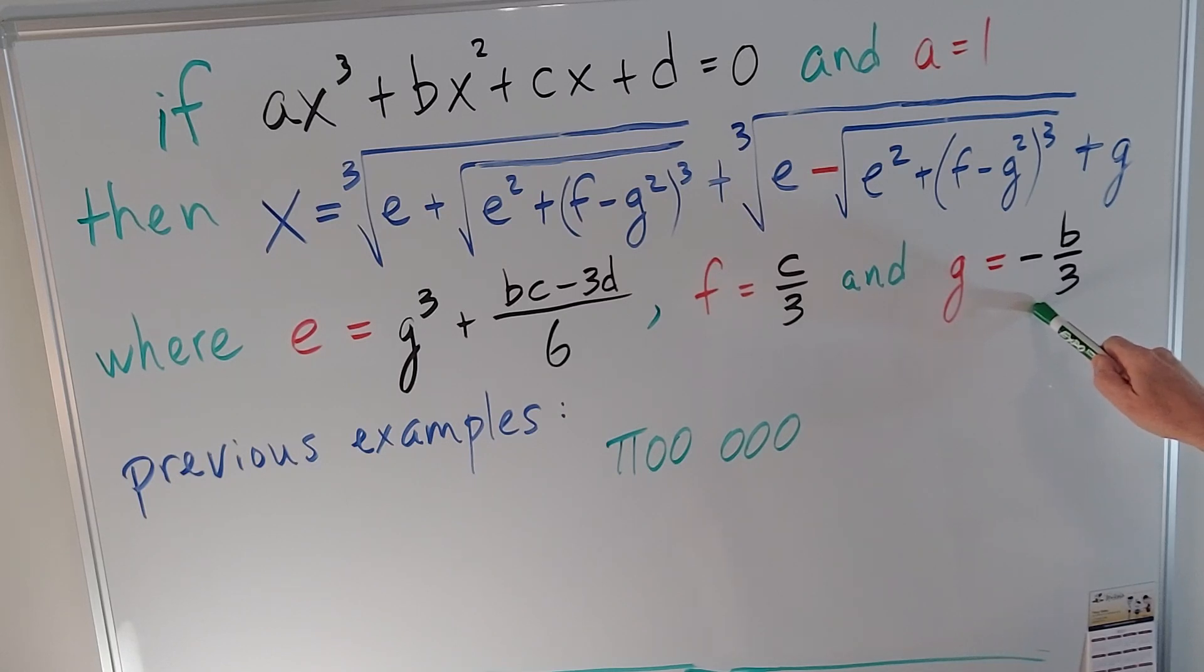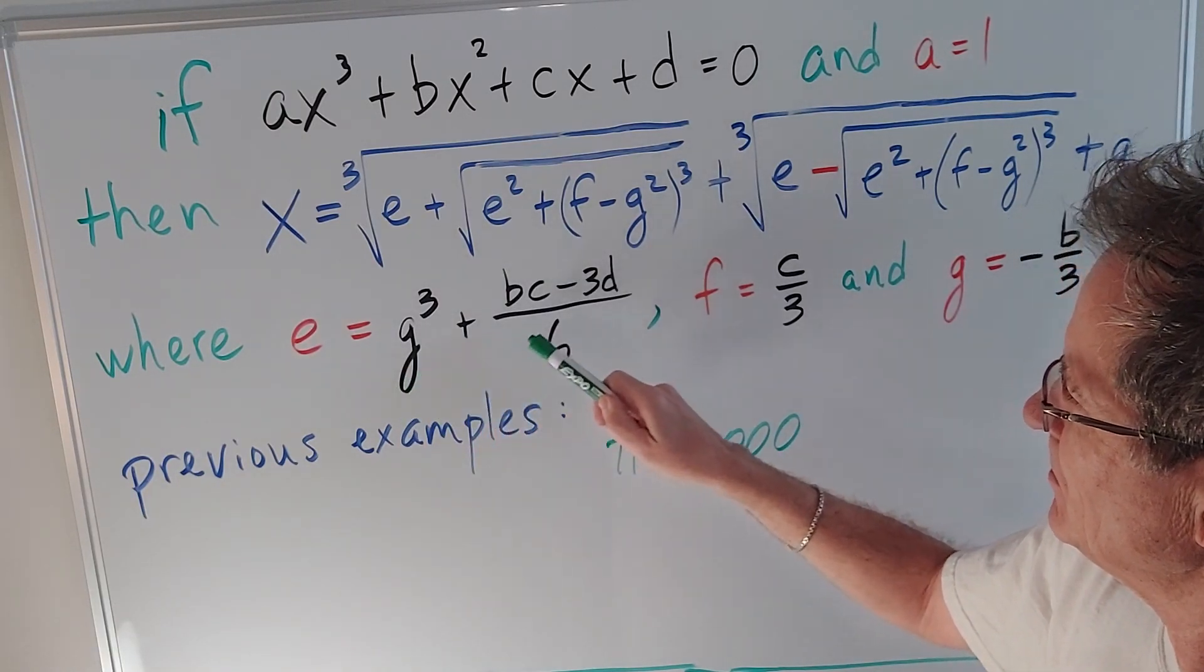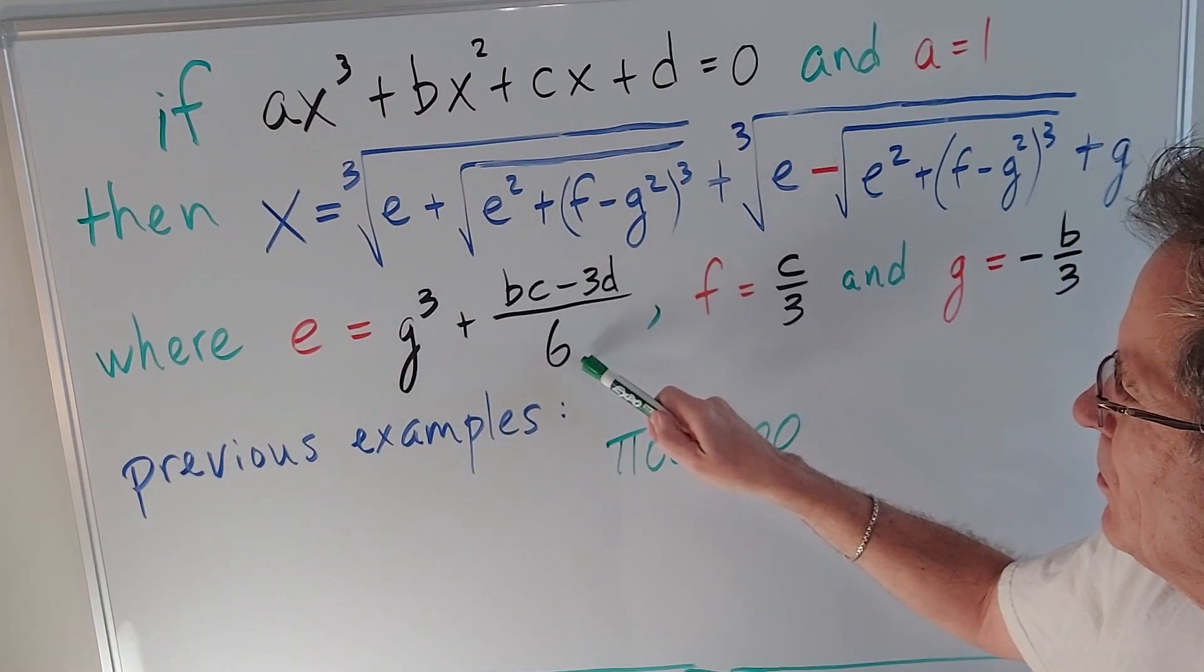Where g is negative b over 3, f is c over 3, and e is g³ + bc - 3d all over 6.